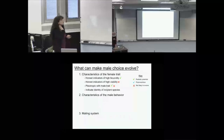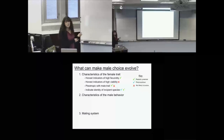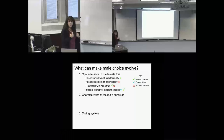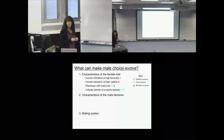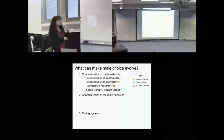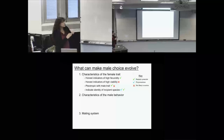Can we get male choice evolving when female traits indicate the identity of incipient species? Yes, that is one way it can happen. Looking at characteristics of the female trait overall: honest indicators of high fecundity — green check; honest indicators of high viability — X; pleiotropy — green check but not impressive; species identity via choosiness — green check. These are a mixed bag. Some work and some don't, with no consistent message.